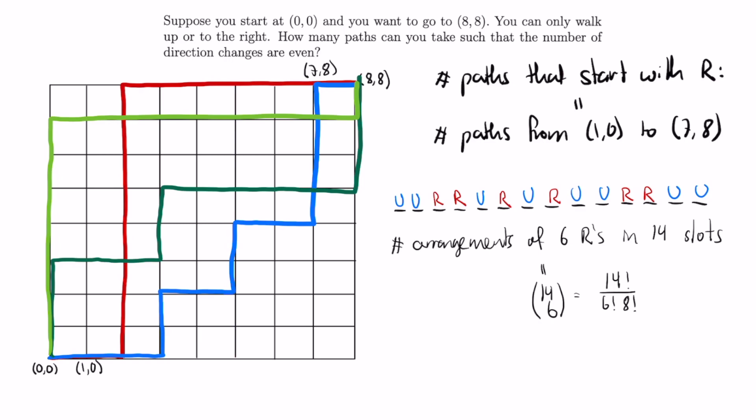Another way to look at this is that we have 14 choices for the first slot, 13 choices for the second slot, 12 choices for the third slot, and so on, which gives us the 14 factorial at the top.